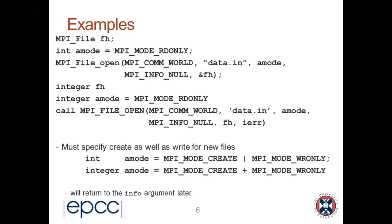The common access modes are MPI_MODE_CREATE, MPI_MODE_READ_ONLY, MPI_MODE_WRITE_ONLY, and MPI_MODE_READ_WRITE. If you're only going to read a file you should open it with READ_ONLY. If you want to create and write a file you have to specify the union of MODE_CREATE and MODE_WRITE_ONLY - in C you do logical OR, in Fortran you can just add them together. If you open a file for write and it doesn't exist it will fail - you have to explicitly say you want to create it. The info object is the way you pass hints to MPI.IO; if you don't want to specify any additional information you just pass MPI_INFO_NULL.